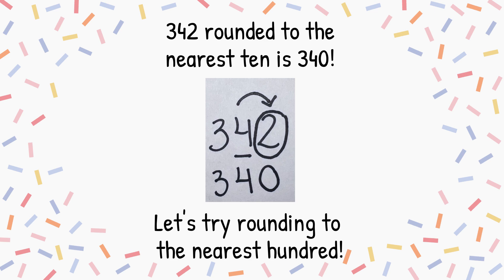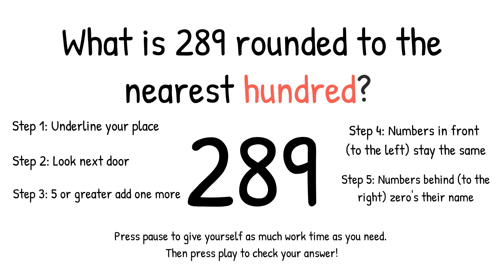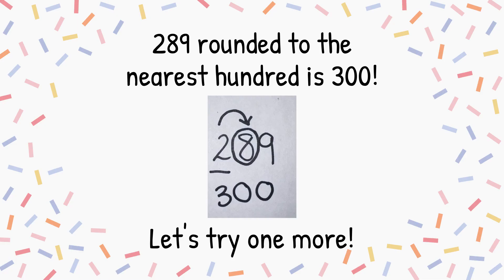Let's try rounding to the nearest hundred. What is 289 rounded to the nearest hundred? Press pause to give yourself as much work time as you need, then press play to check your answer. 426 rounded to the nearest hundred is 400. Great job! Let's try one more.